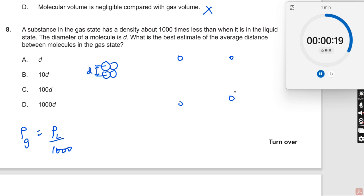What is the best estimate of the average distance between the molecules in the gas state? So let us say they are separated like this. Let us say the distance between them is x over here. Now, what do we have here? So this is for liquid and this is for the gas. So we want to find out the best estimate of the average distance.